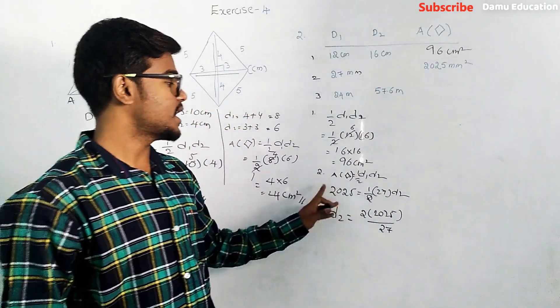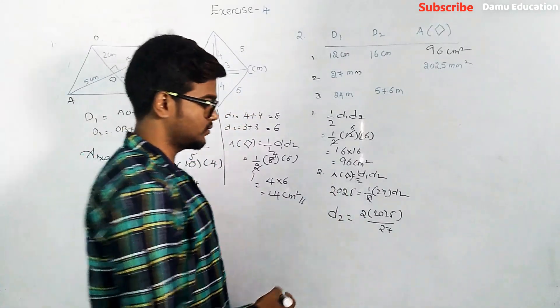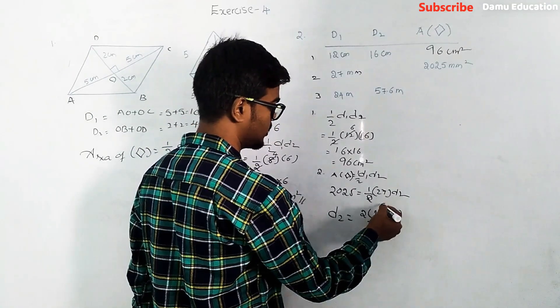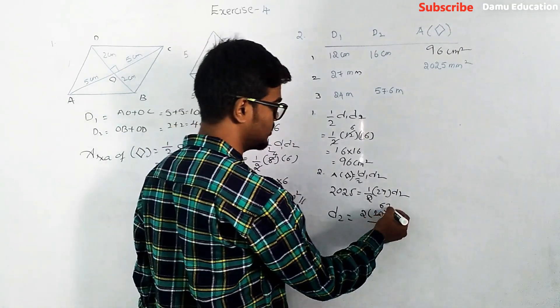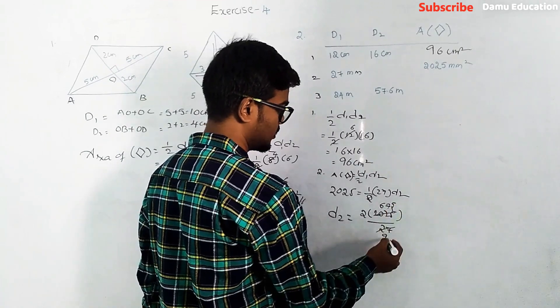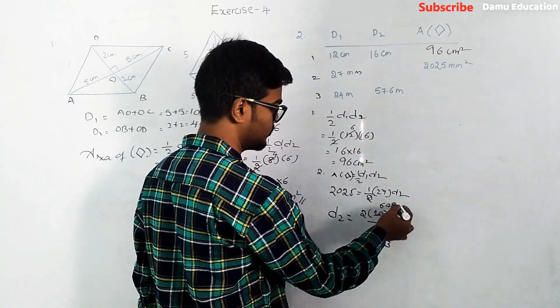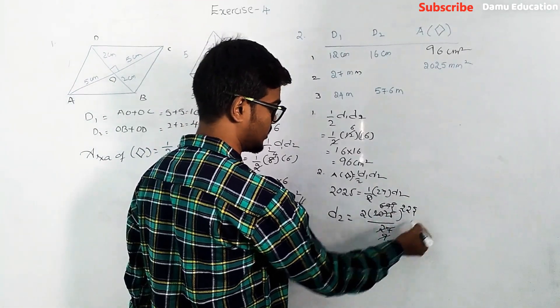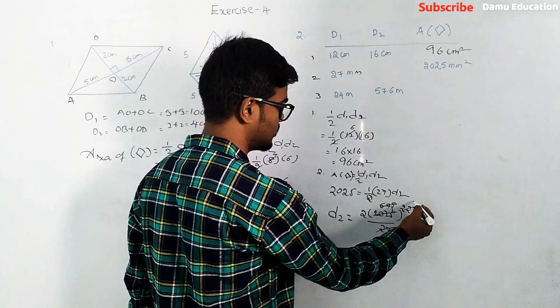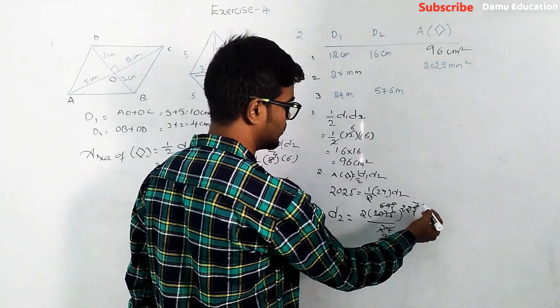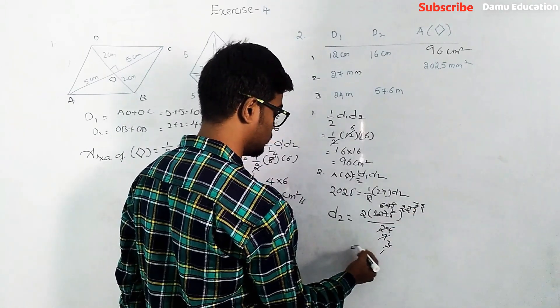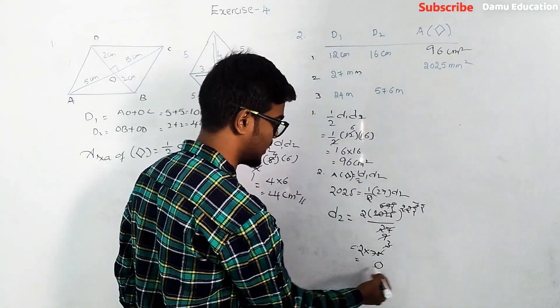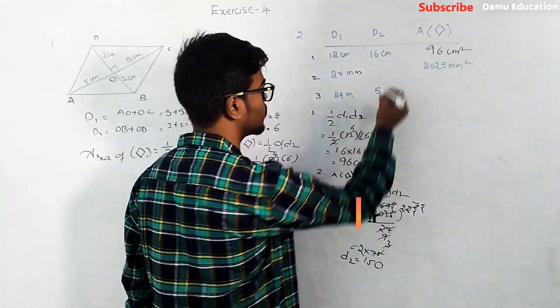We are shifting directly. So 27 - dividing by 3s: 27 goes to 9, 9 goes to 3, 3 goes to 1. For 2025 - dividing by 3s repeatedly: 2025, 675, 225, 75, 25. Then 25 divided by 5s gives 5, then 1. So 2 into 75 equals 150. So d2 equals 150 mm.